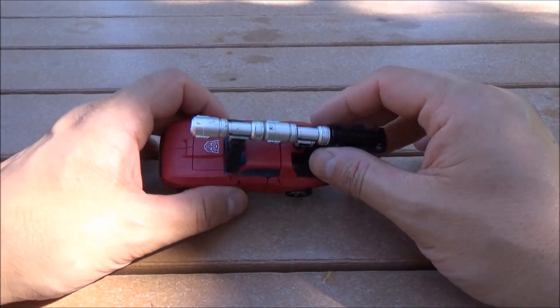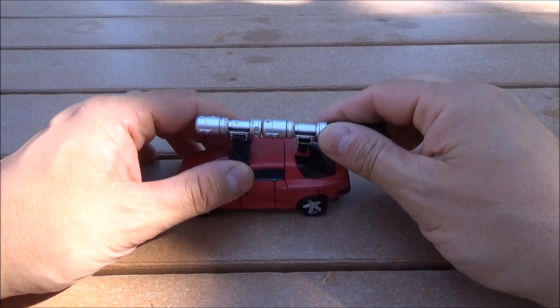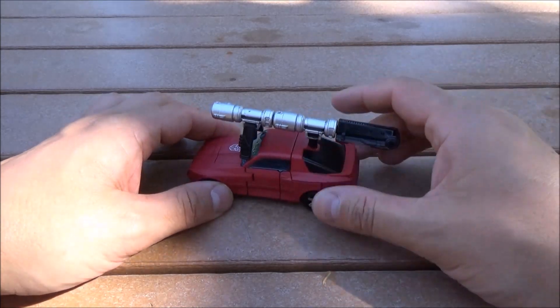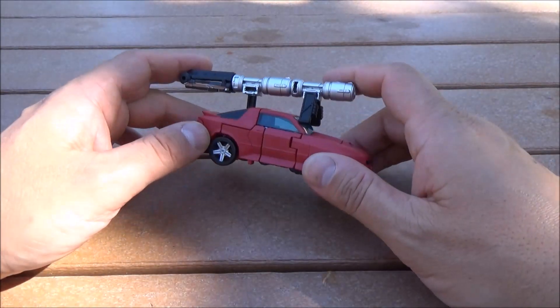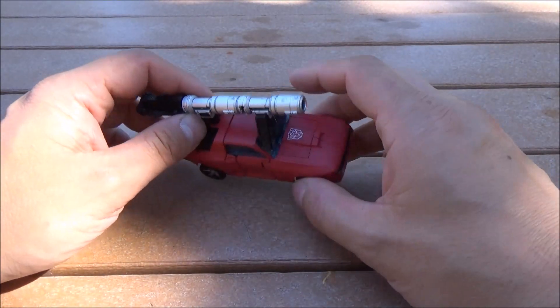Yes, for a G1 line, Cliffjumper is actually before Bumblebee in the Earth mode department, so we don't have a recolor of a Bumblebee here.